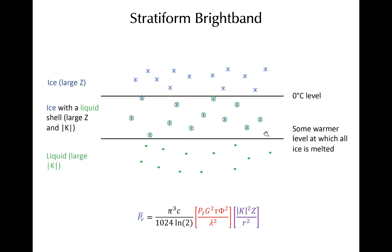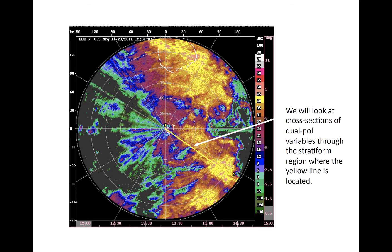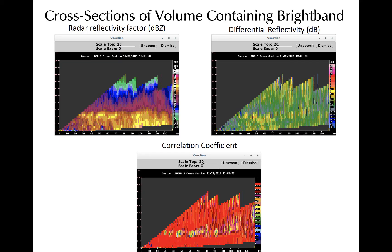As stated in the lecture on dual pole, this can also manifest itself in the differential reflectivity and copolar correlation coefficient. We'll look at some examples of a bright band that occurs in regions of stratiform precipitation, where vertical motions are not strong enough to loft large hydrometeors. We'll look at vertical cross sections along the yellow line to the southeast of the radar. PPI cross sections of reflectivity, ZDR, and rho-HV are shown. The maximum reflectivity and ZDR are clearly seen at an altitude of around four to five kilometers, accompanied by minima in the correlation coefficient.